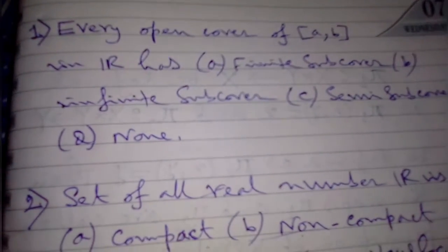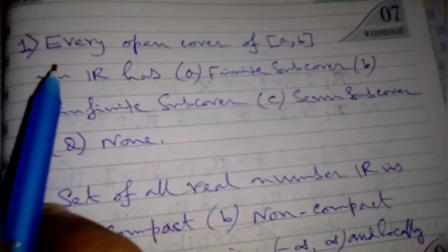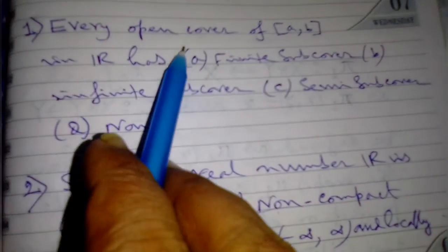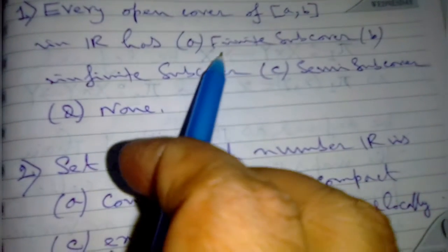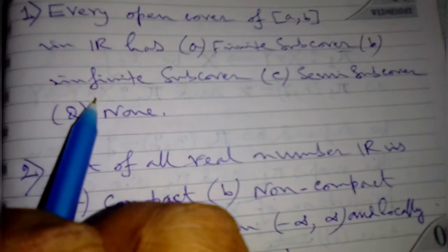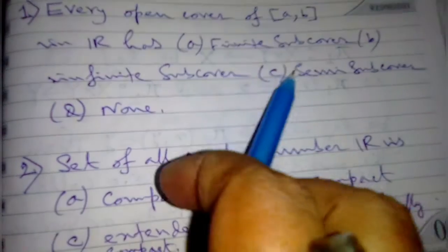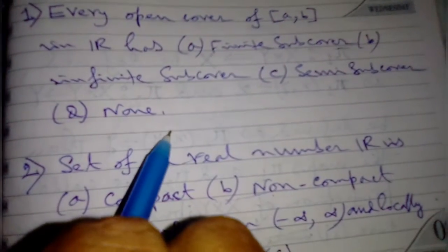Hello viewers, I discuss today another topological aspect that every open cover of [a,b] in R has: first option is finite subcover, second is infinite subcover, third is semi subcover, and fourth is none of the other.